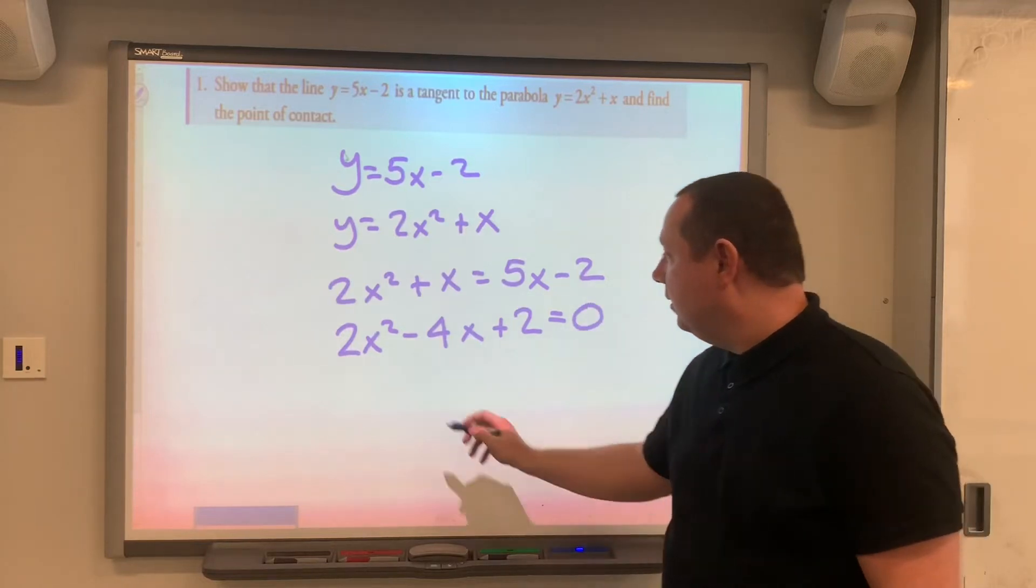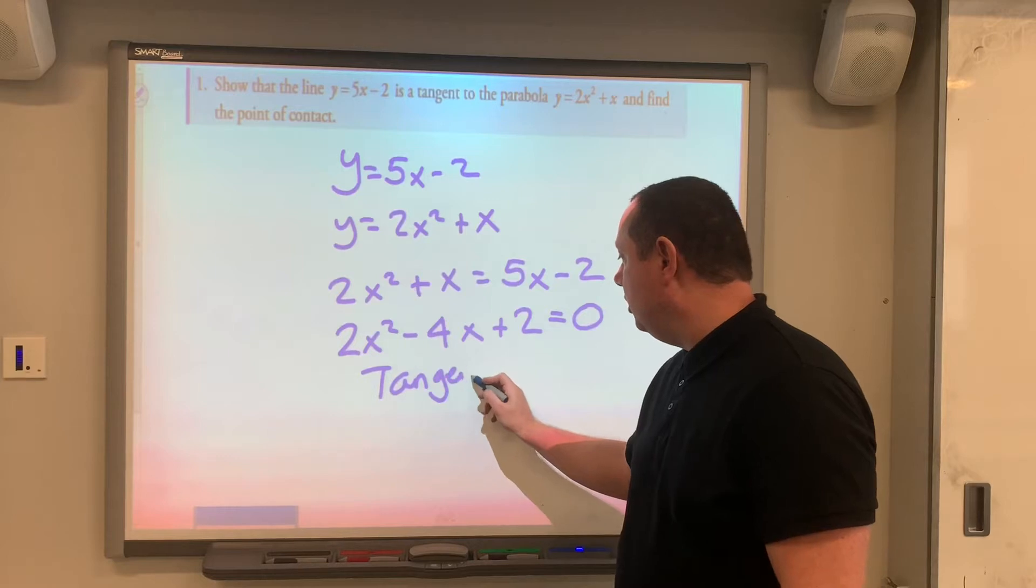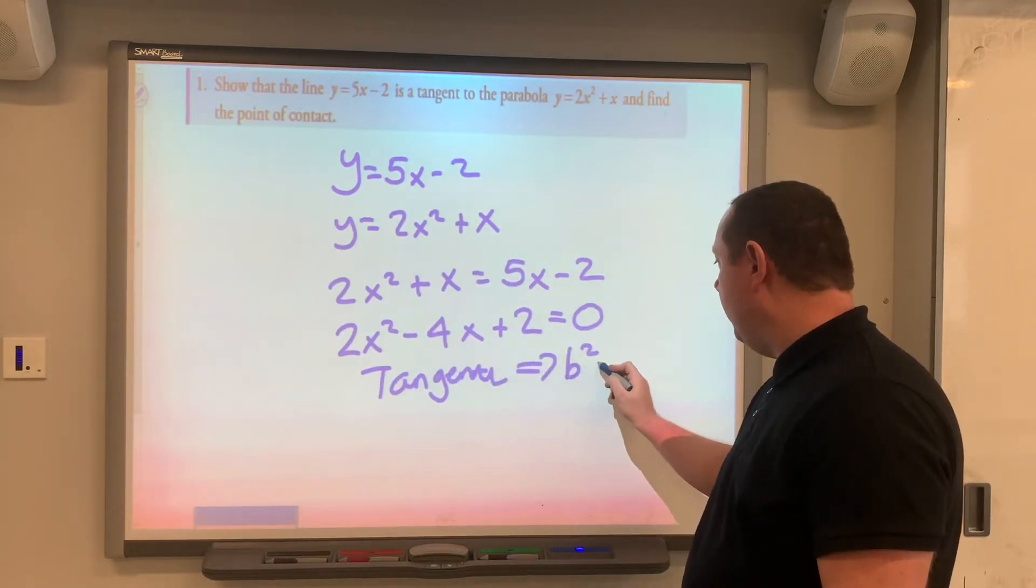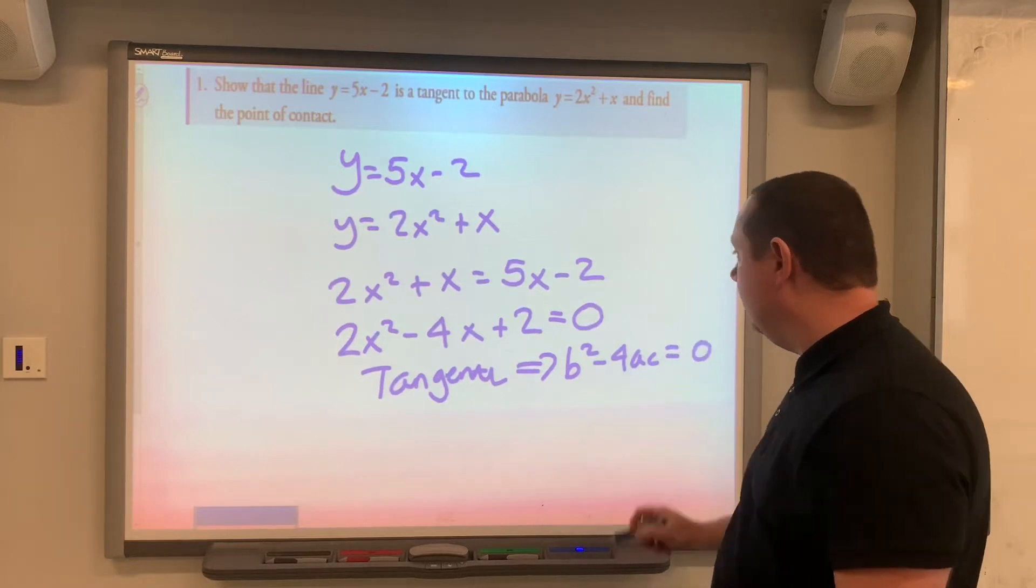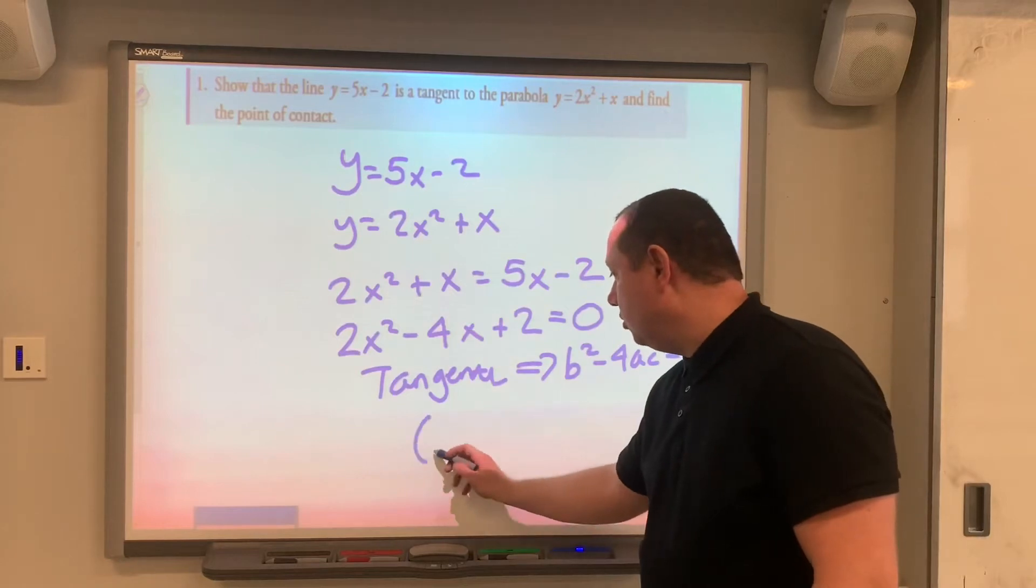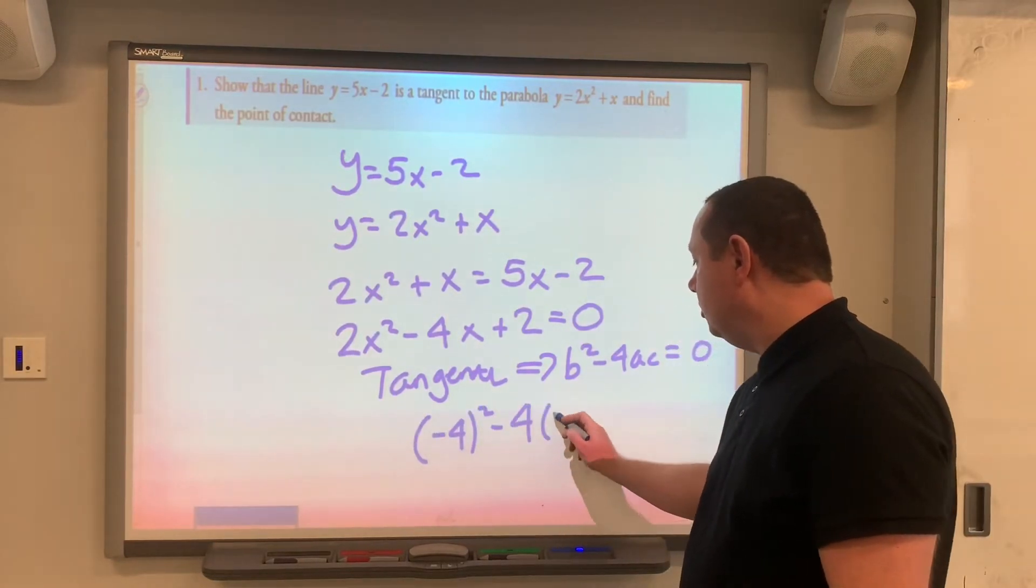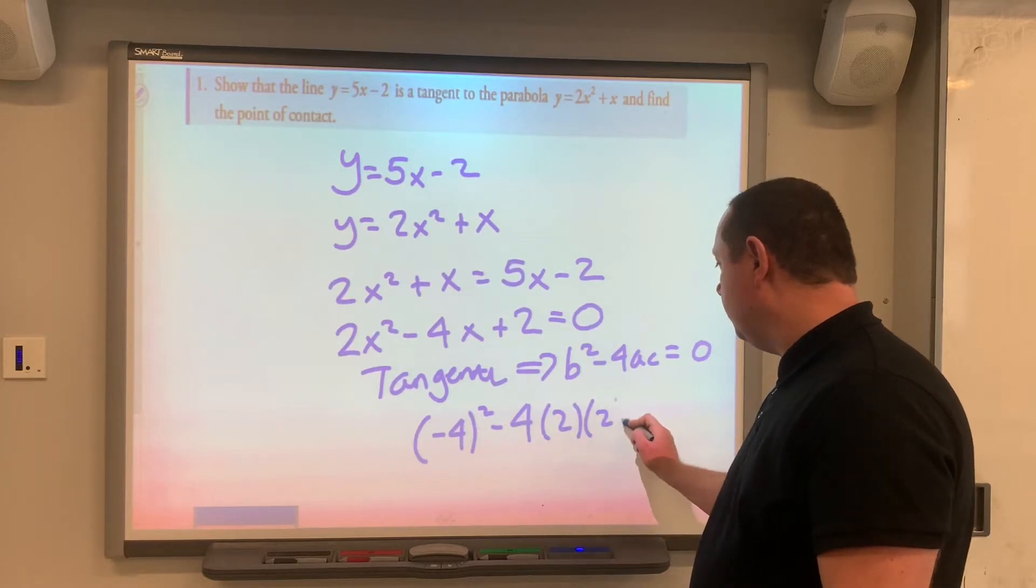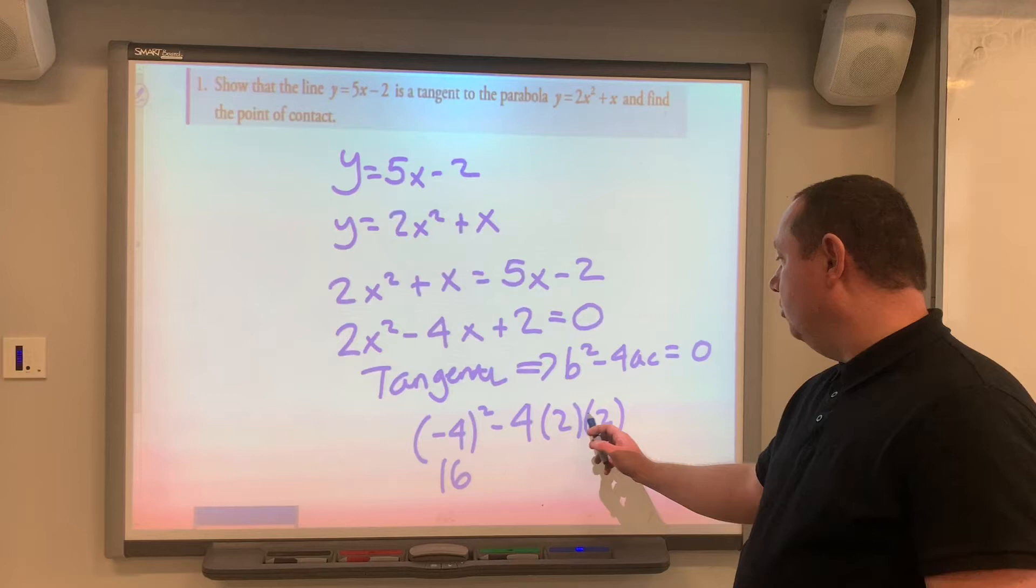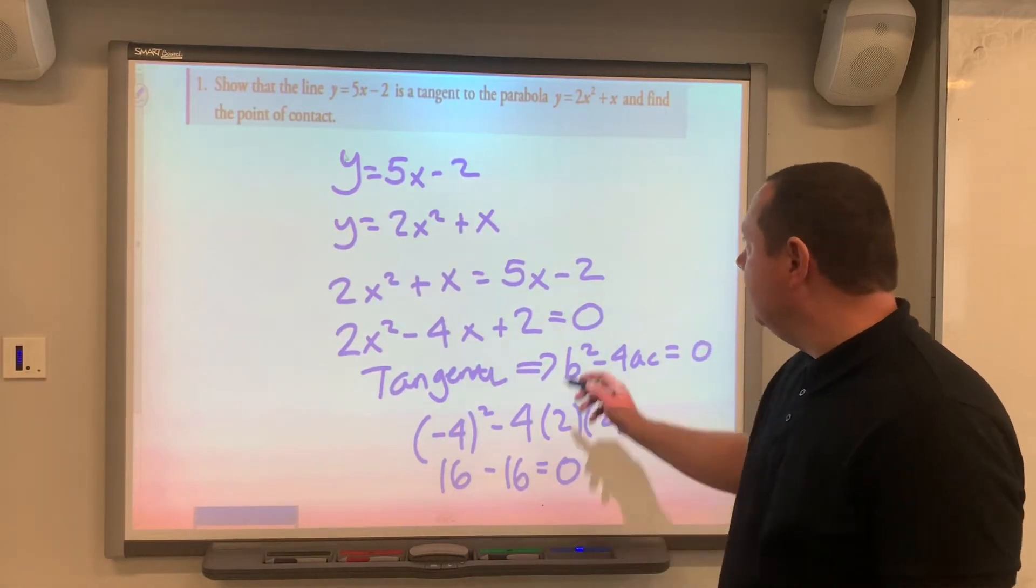Tangent is what we're told in the question. If it's a tangent, then b squared minus 4ac would equal to zero. So let's check b squared minus 4ac. Minus 4 squared minus 4 times 2 times 2, that's 16. 4 times 2 is 8, times 2 is also 16, is equal to 0.